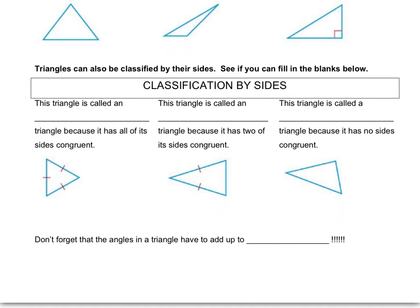Triangles can also be classified by their sides. I'm going to pause this for a moment, and you fill in these triangles to see if you can recall what it means to be each of these triangles. The triangle that has all of its sides congruent is the equilateral triangle. A triangle that has two of its sides congruent is an isosceles triangle. And the triangle that has no sides congruent is called the scalene triangle. Notice the tick marks on the equilateral and isosceles to show that those sides are congruent.